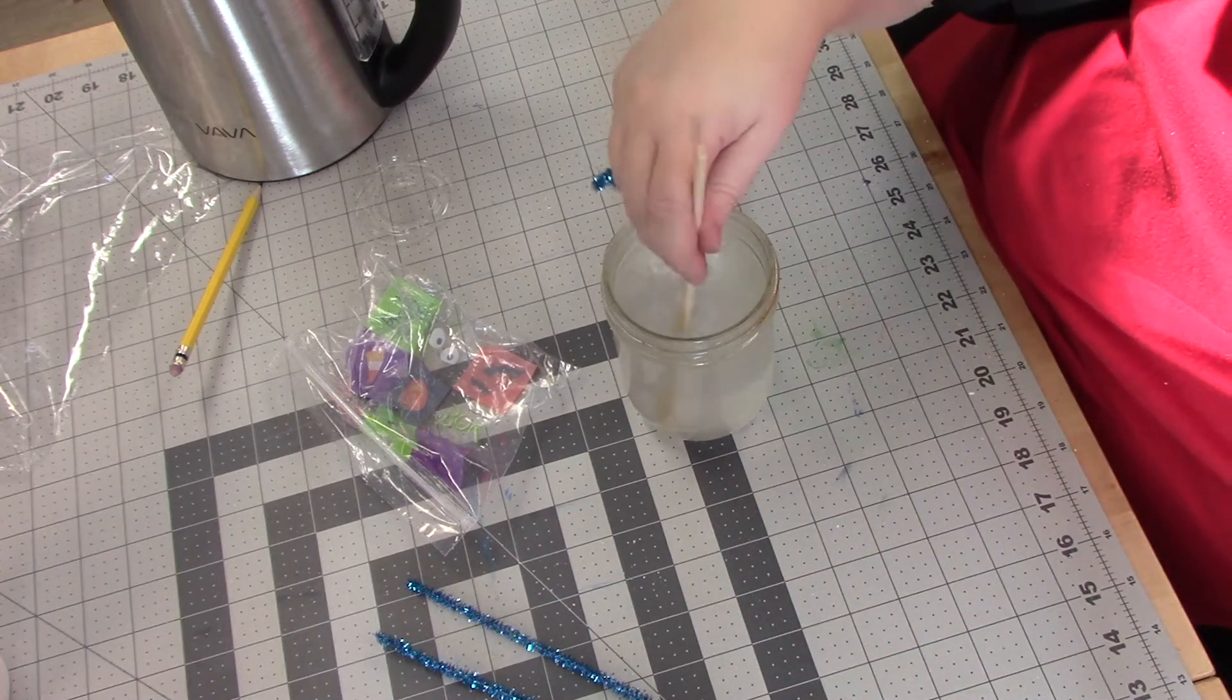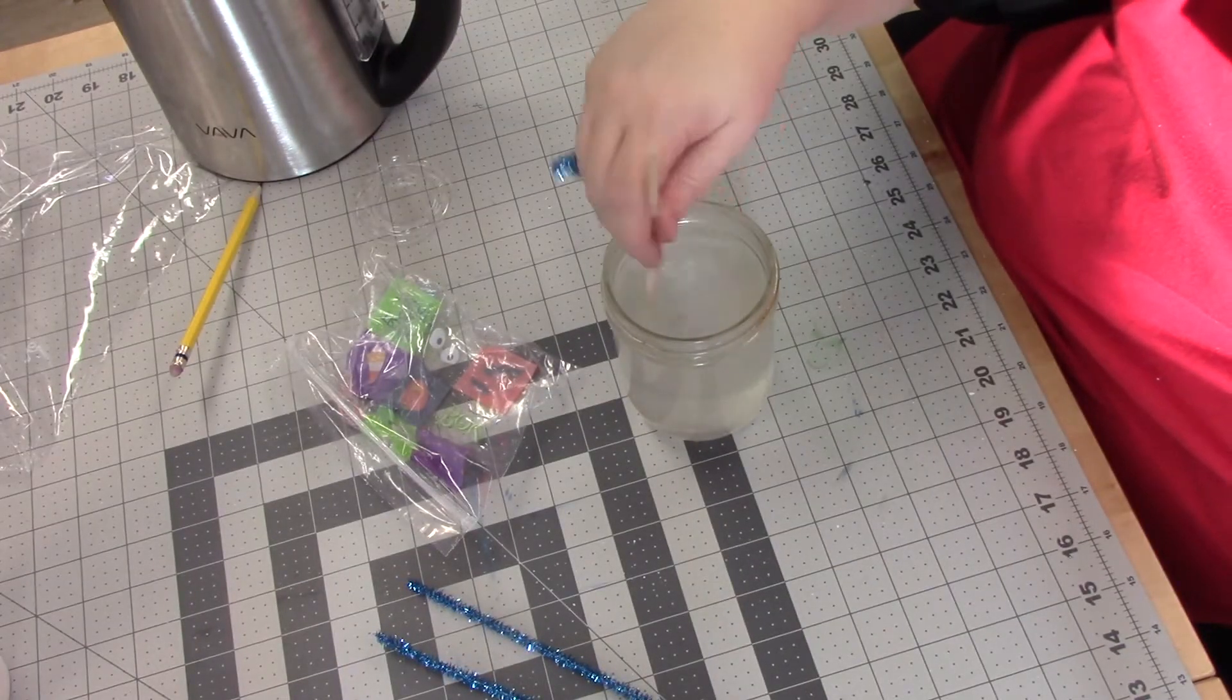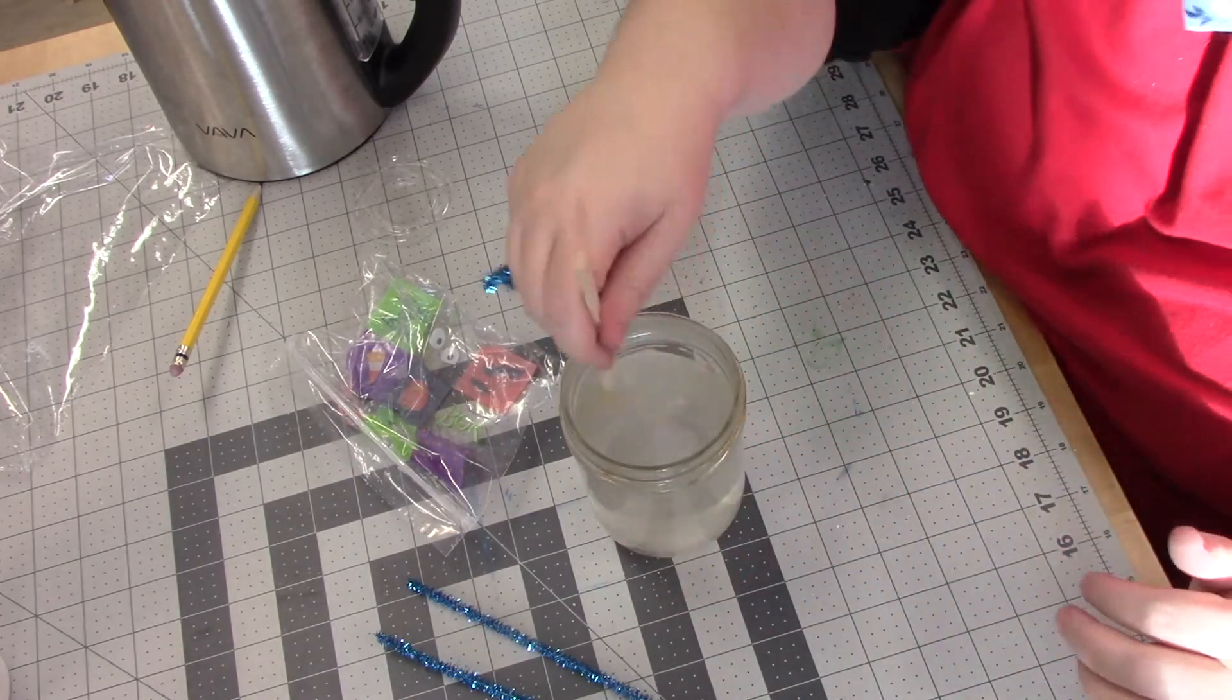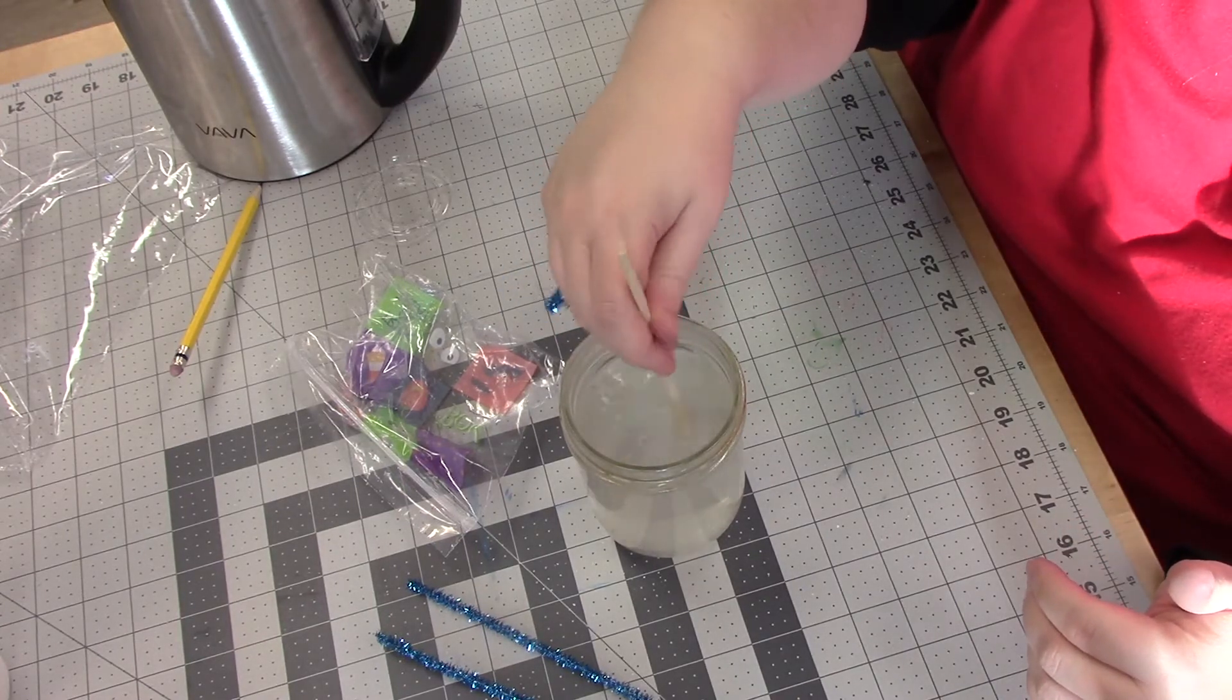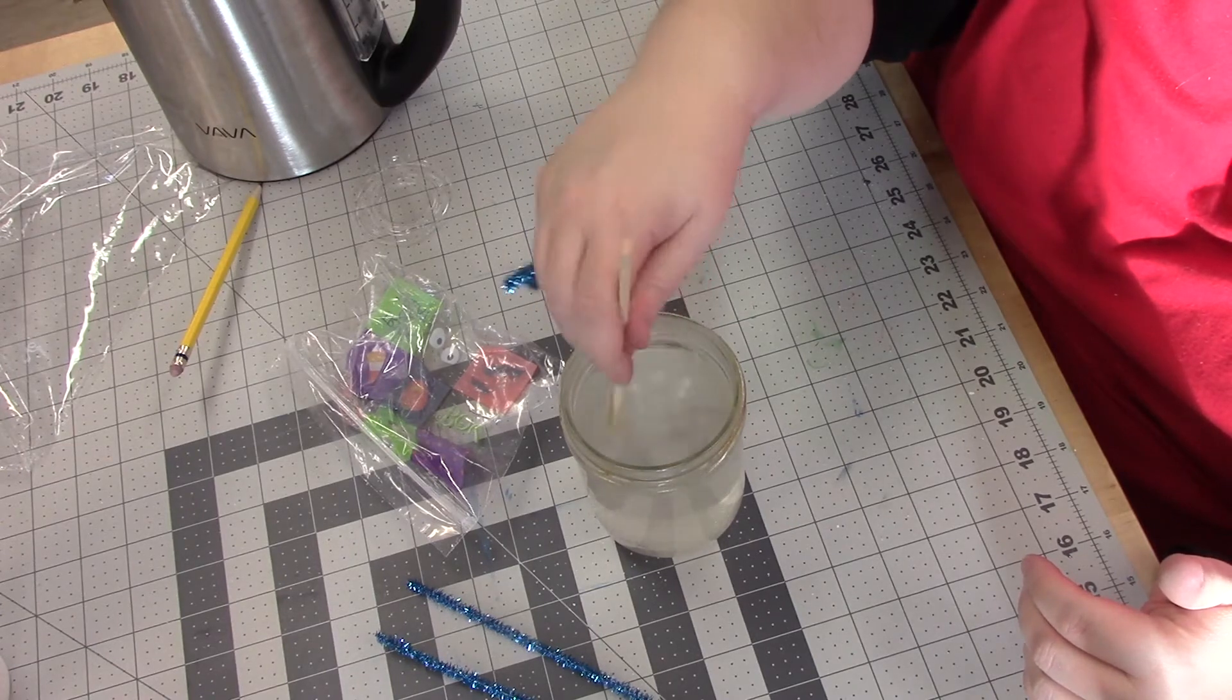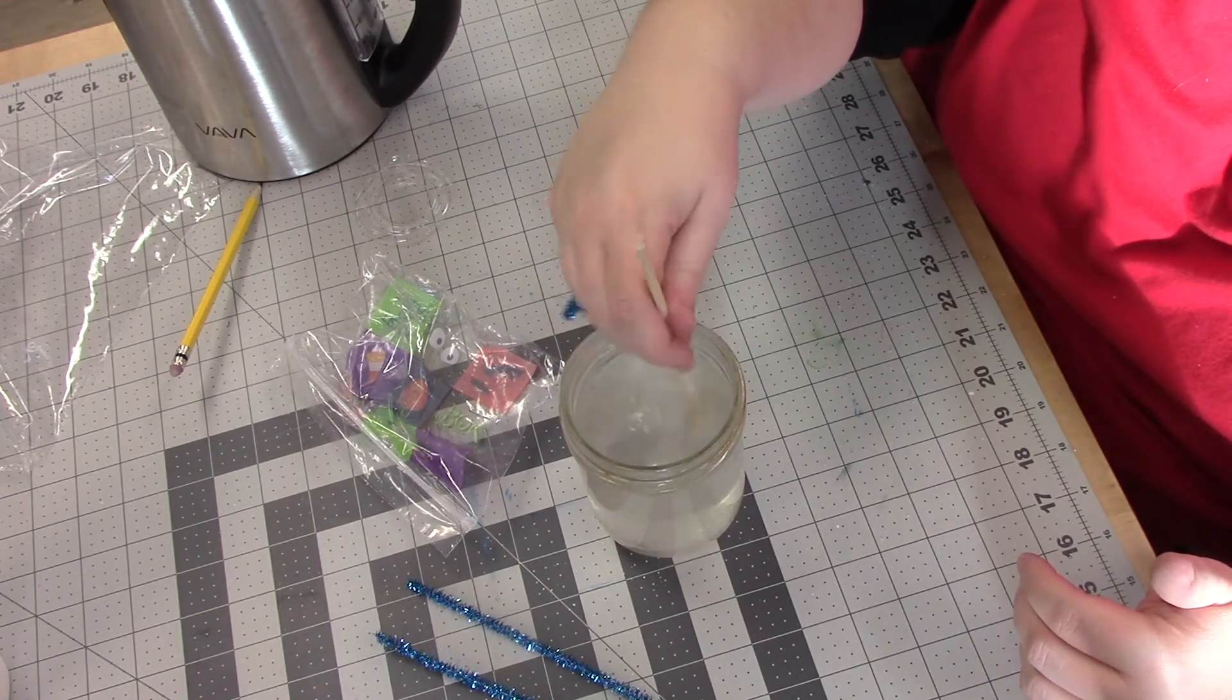So you want to make sure that your water is almost clear before you dangle your snowflake in it. So you can see that that's starting to get clear. Okay, now this is the hard part—letting your snowflake sit for 24 hours. That's how long it will take for the crystals to grow.